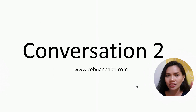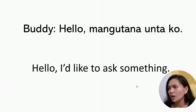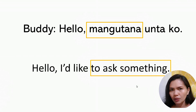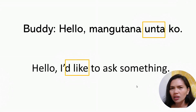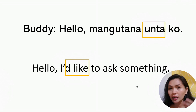Now let's go to conversation two. We still have buddy and Judy — buddy is the foreigner and Judy is the local. Buddy says: 'Hello, mongotana unta ko' — meaning 'Hello, I'd like to ask something.' Mongotana is a very common word when you're going to ask a question. You can also just say 'mongotana ko,' removing the unta.